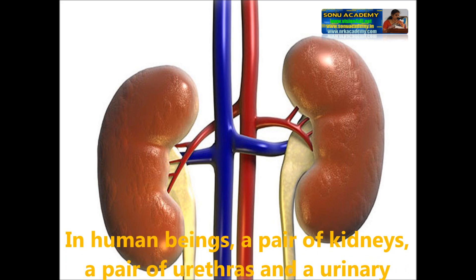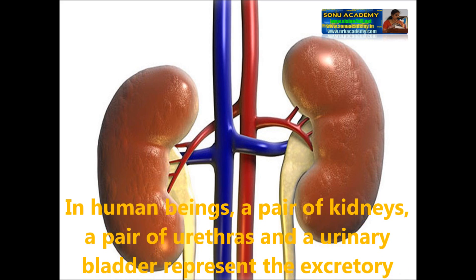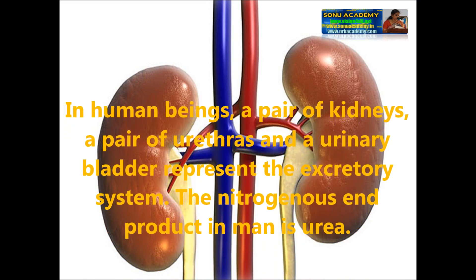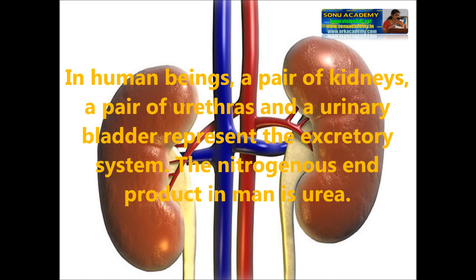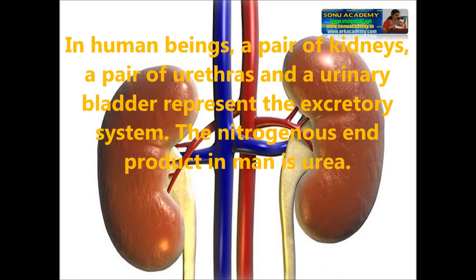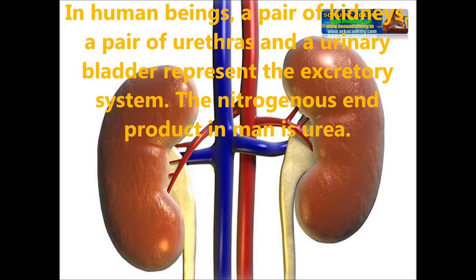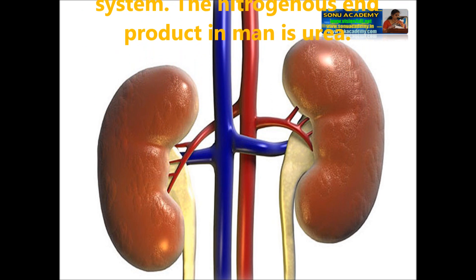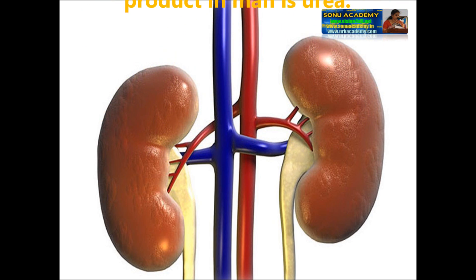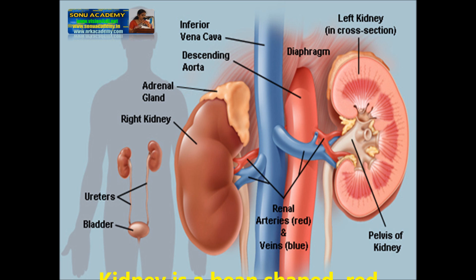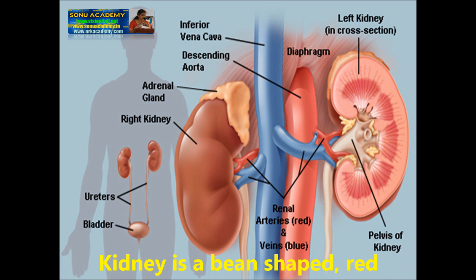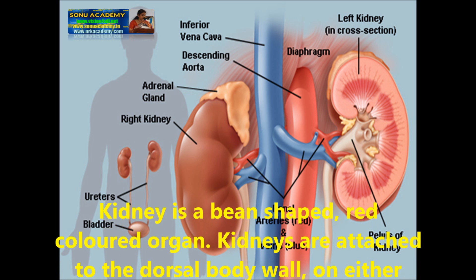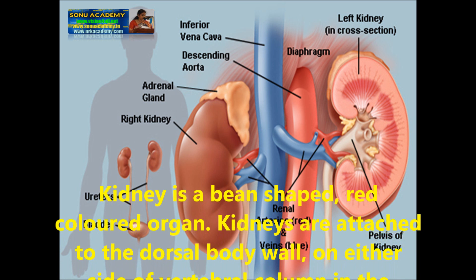In human beings, there is a pair of kidneys, a pair of ureters, and a urinary bladder, which represent the excretory system. The nitrogenous end product in man is called urea. Let us see the process of the excretory system in human beings.